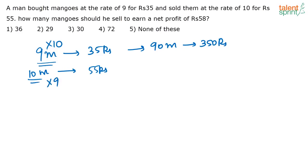Similarly, if I multiply the second equation by 9, that is the left hand side and the right hand side, I can say that I am selling 90 mangoes for, so 55 into 9 is going to be Rs. 495. So what can I say? I can say that I have bought 90 mangoes for Rs. 350 and I am selling this 90 mangoes for Rs. 495.